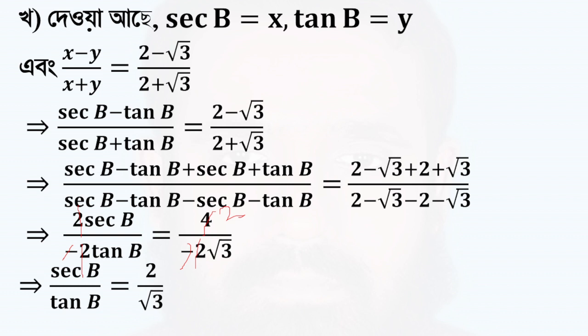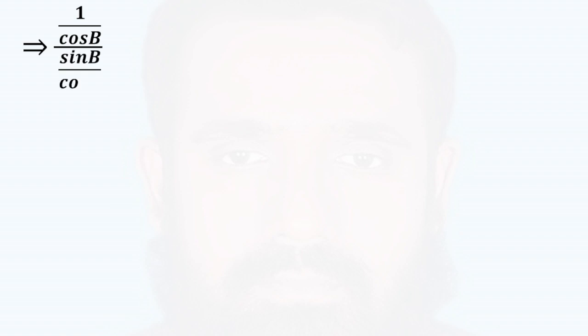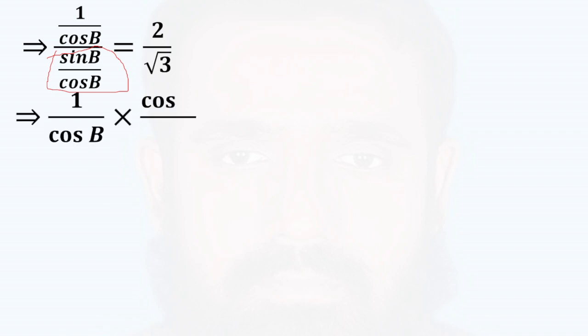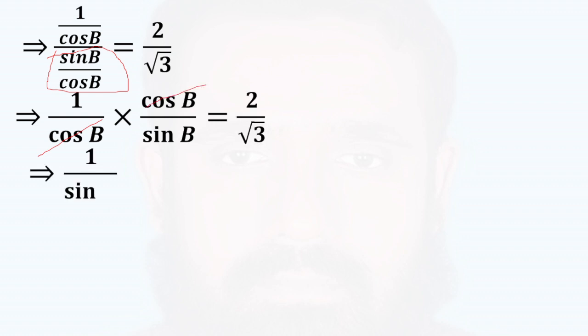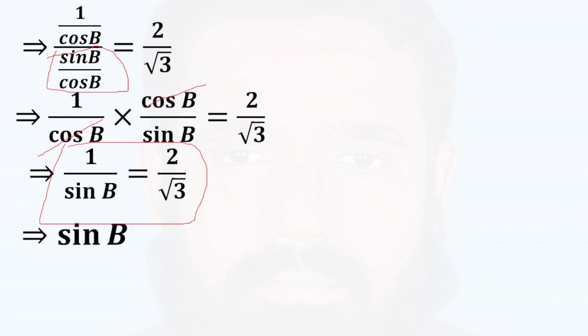So if we have sec b by tan b, and tan b is sin b over cos. So sec b by tan b: this is 1 over cos into cos by sin, which is 1 by sin. 1 by sin is 2 by root 3.